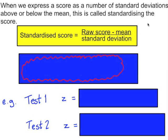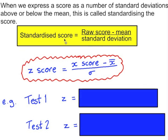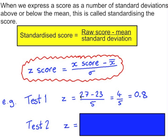We can be more specific about Amy's performance by calculating her standardised scores in each test. A standardised score, also known as a z-score, is calculated by subtracting the mean from the raw score and dividing by the standard deviation. In test 1, Amy's z-score was 27 minus 23 divided by 5, which is 4 over 5 — giving 0.8.